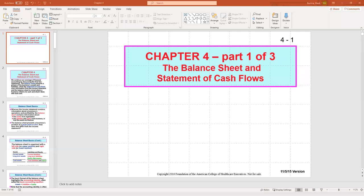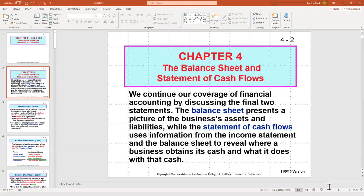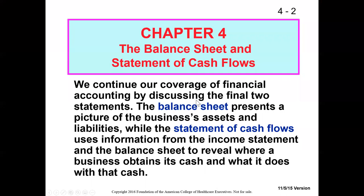In Chapter 3, we covered the income statement and statement of changes in owner's equity, which covered the change over time. The balance sheet is more like a snapshot of what the organization has for resources and the obligations that the organization has, both to its owners as well as to its creditors.